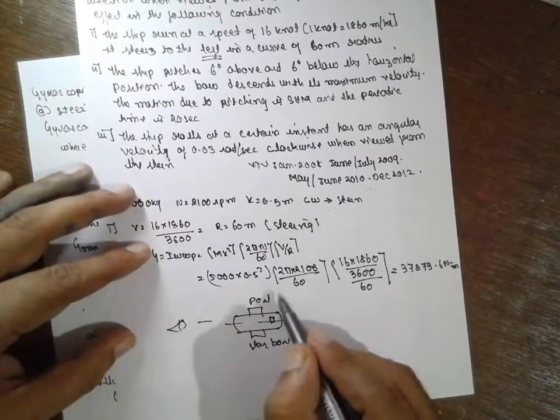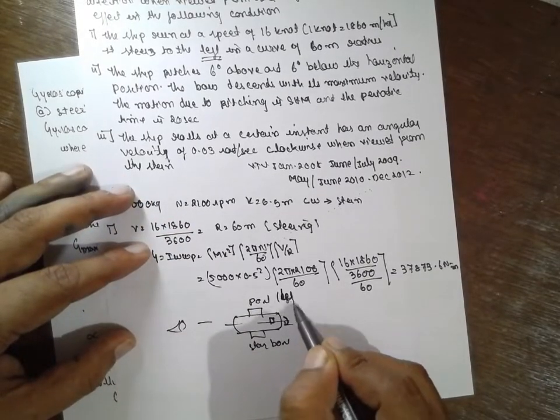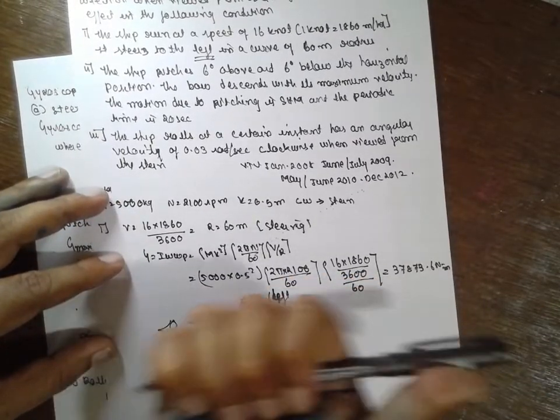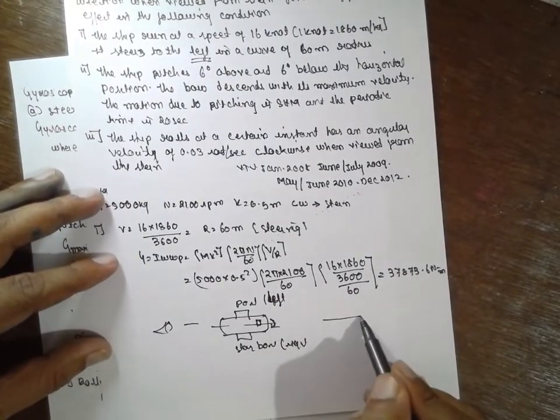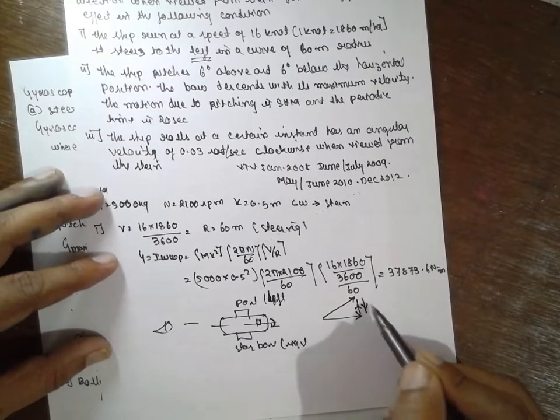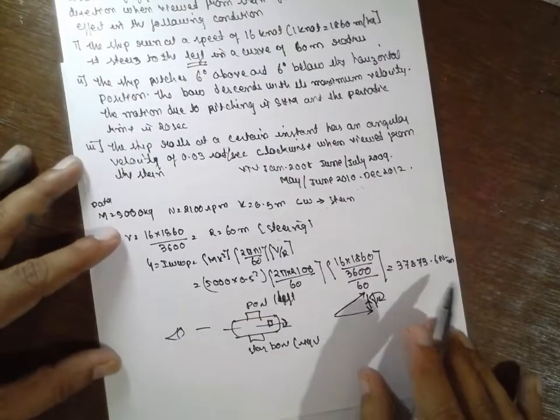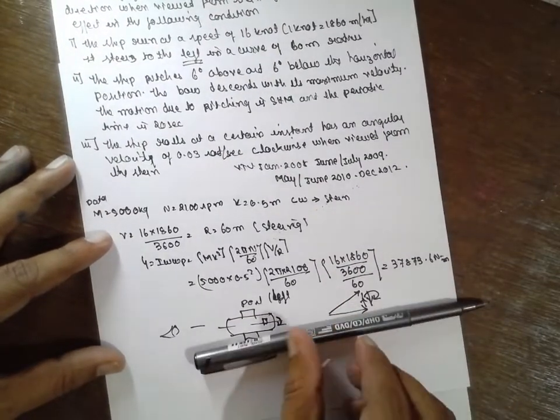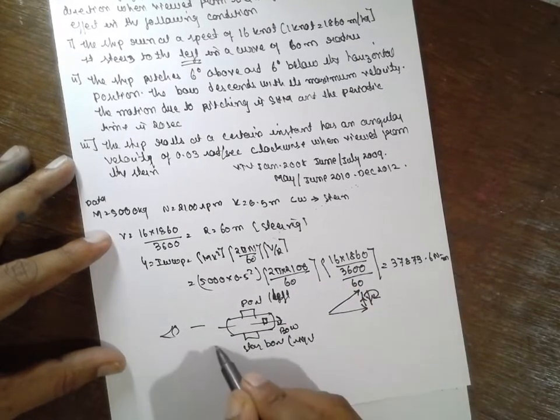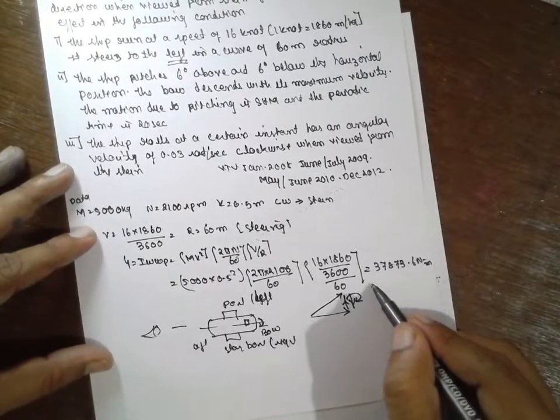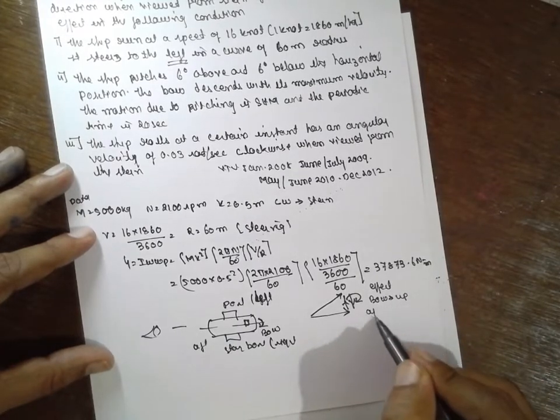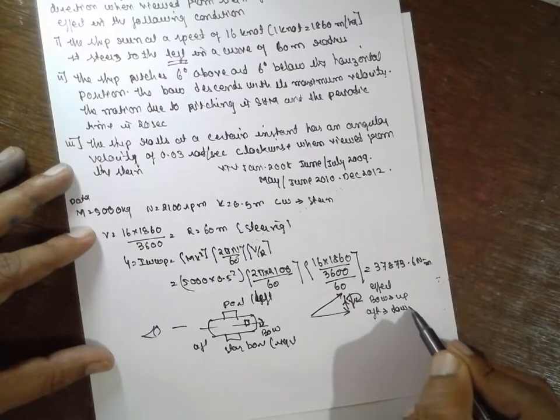This becomes left for me, and this becomes right. I will hold the pen, clockwise direction, thumb indicate in this direction. I will draw. If it moves left direction, active gyroscope, reactive gyroscope. Based on active, draw it. Here what happened, in this way the condition will be, the bow will rise, the tail will dip. This will be bow, this will be aft or stern. Here we have to effect. What is the effect here? Bow rises or bow up, aft or stern will be down.